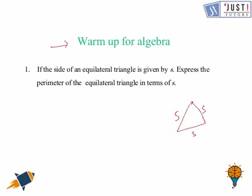We need to find the perimeter of this triangle. The perimeter is the boundary of a closed shape, so we need to add all the sides of the triangle. That would be s plus s plus s, which equals 3s. So the perimeter of the equilateral triangle whose side is s is 3s.